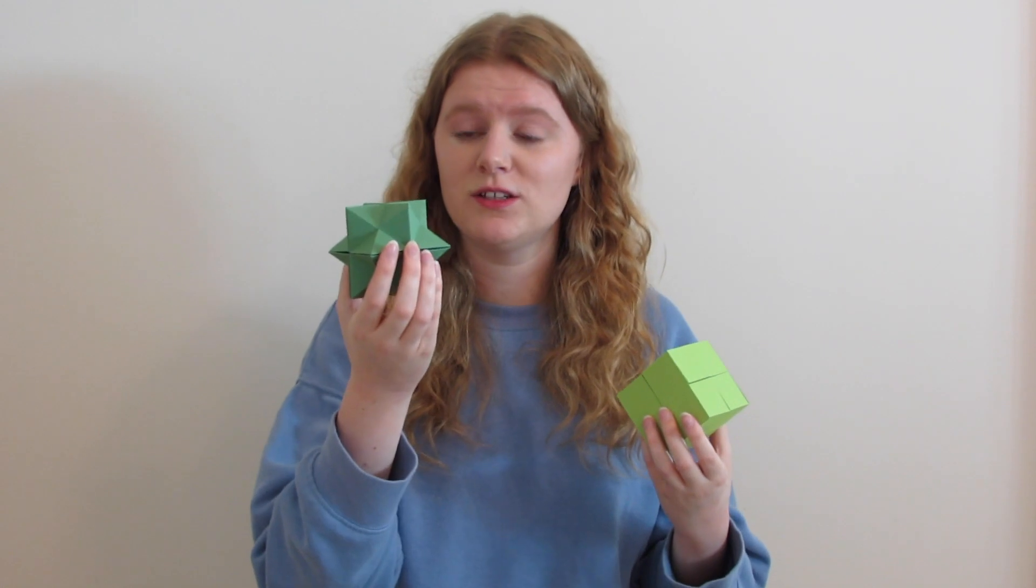Each of the two parts of the Yoshimoto Cube, when folded up, can form either a cube, or this, which is a stellated rhombic dodecahedron, also known as Escher's solid. Escher was a Dutch artist.